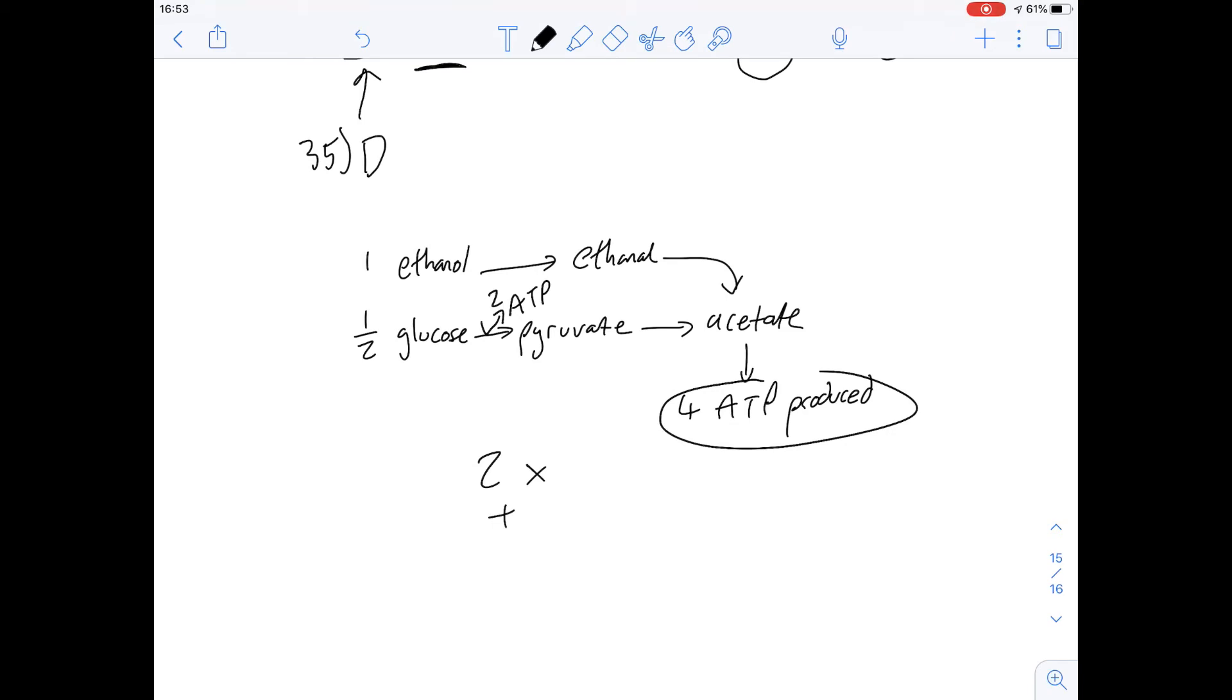In fact you need 2.5 ethanol molecules to produce the same amount of ATP as one glucose molecule.